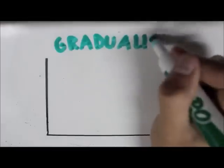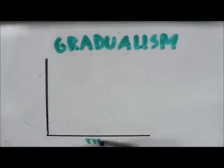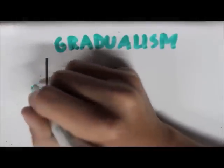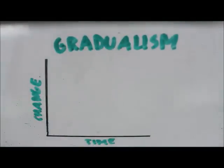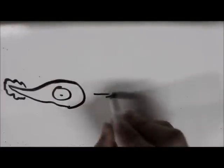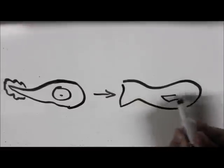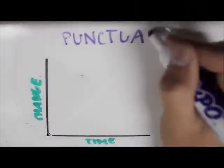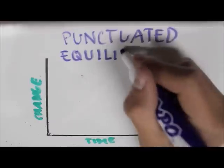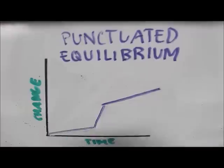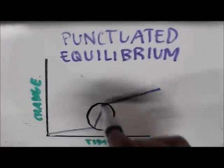As noted in the chart, Gradualism is a steady and gradual change over a certain time. Animals have to evolve or else they will become extinct. Take the example of a fish that had small changes to adapt and compete better in its environment. In this chart, we see constant evolution, then a dramatic change, followed by constant evolution again. This is caused by many changes which force the animal to adapt.